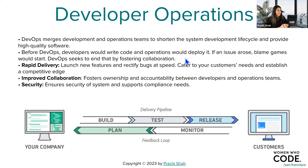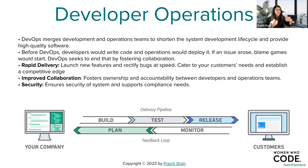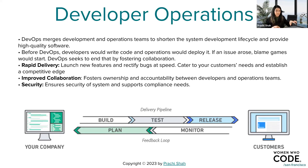DevOps, or developer operations, merges development and operations teams to shorten the application development life cycle and produce high-quality software faster. Traditionally we have DevOps or ops teams and development teams; DevOps bridges these teams to push high-quality code faster. Before DevOps, developers would write code, operations would deploy it, and if things went wrong there was a lot of blame — it did not promote healthy communication and collaboration. DevOps solves this collaboration problem within engineering teams.